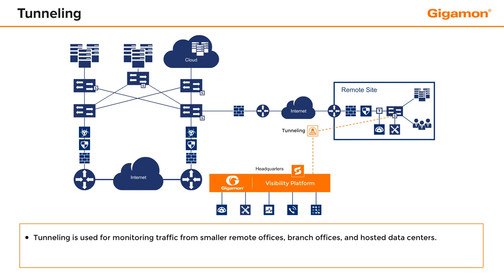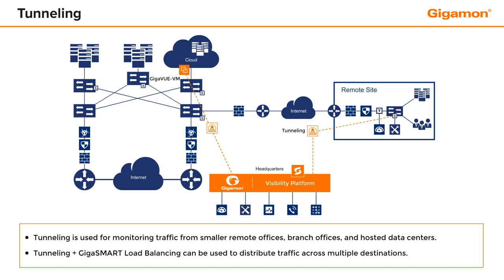Similarly, a GigaView VM-empowered virtual network can forward selected packets to physical tools through a GigaSmart tunnel. You can also use tunneling with GigaSmart load balancing to distribute outbound traffic across multiple destination tunnel receivers.